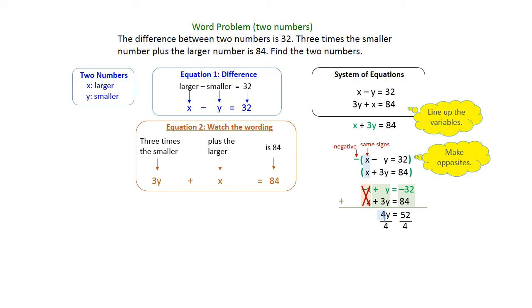Now we're going to divide by the 4 and get y is equal to 13. And that gives us our smaller number.